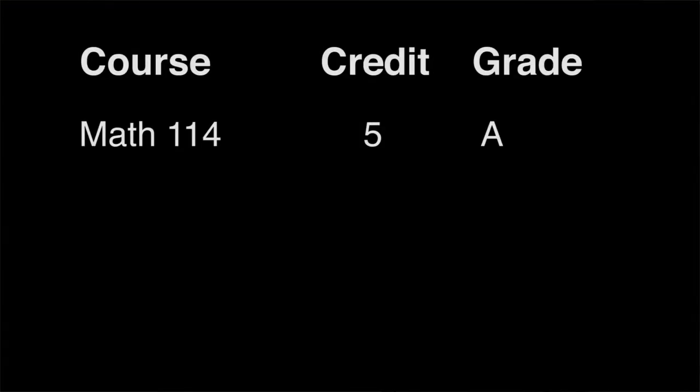So where can you find your GPA, how is it calculated, and what can you do to bring it up if it's low? Here's how to calculate your GPA. First of all, you'll need the number of credit hours and the grade for each class. For example, here's Math 114: five credits and an A.